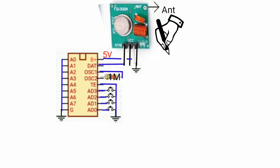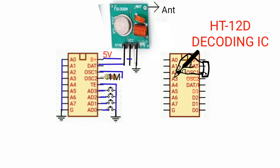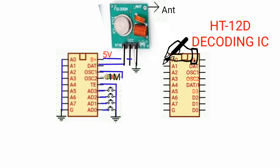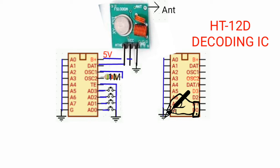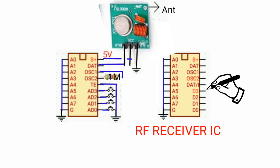Now let's place the decoding IC, or the receiver IC. Connect A0 to A7 and pin 9 to the ground. D1 to D4 will be connected to the load.